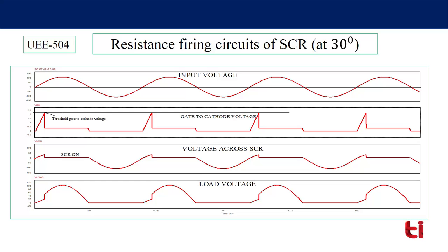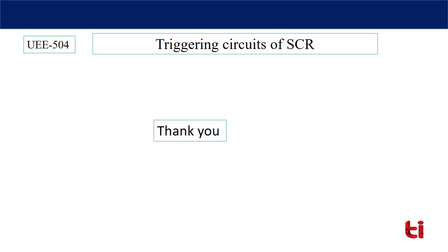In coming classes these limitations will be removed by resistance-capacitance firing circuits and UJT firing circuits. Another disadvantage of this circuit is that power loss occurs across the resistances, reducing circuit efficiency, and the triggering process is very slow. So the main demerits of the resistance firing circuit are: firing angle limited to 90 degrees, resistive power losses reducing efficiency, and slow triggering. These demerits will be addressed in RC firing circuits and UJT firing circuits.